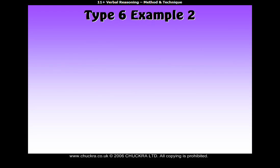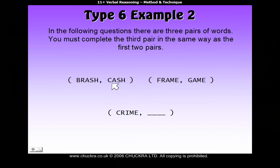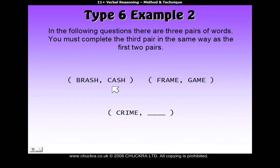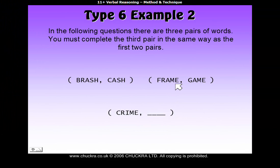Type 6, example 2. Again, in the following questions there are three pairs of words. You must complete the third pair in the same way as the first two pairs. Looking at 'cash', you might notice that although there is a C in 'cash', there isn't actually a C in the word 'brash'. So we have to look for something a little bit different to example 1, because the letter we're looking for is not there. What you can see is that 'ash' exists in the word 'brash' — the last letters are there. And the 'ame' part of 'game' does exist in 'frame'. But out of the B and the R, we have to somehow work out how to get to C. And out of the F and the R, we have to somehow work out how to get to G.